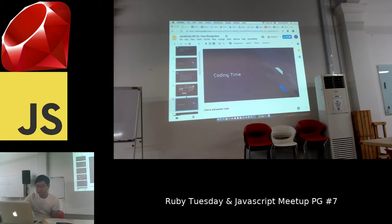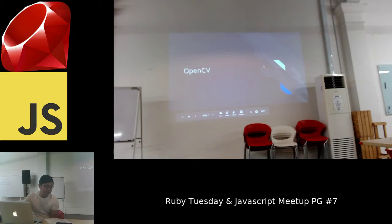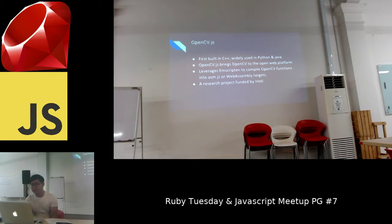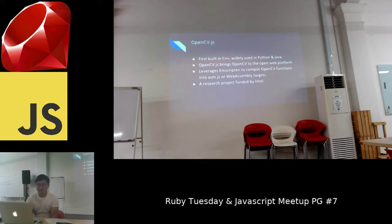Next is OpenCV. OpenCV was originally built in C++ and is widely used in Python and Java. OpenCV.js brings OpenCV to open web platforms by leveraging Emscripten to compile OpenCV functions into ASM.js or WebAssembly. ASM.js is a highly optimizable, low-level subset of JavaScript that enables ahead-of-time compilation. OpenCV.js is currently a research project funded by Intel.